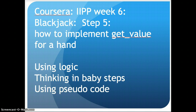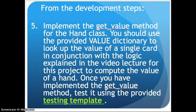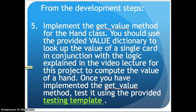Back to Step 5 — how to do the get value for a hand. One way would be to first review what we know. The development steps say: implement the get value method for the hand class. You should use the provided value dictionary to look up the value of a single card in conjunction with the logic explained in the video lecture to compute the value of a hand. Once you've implemented the get value method, test it using the testing template.